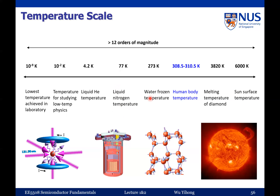Moving up further, you have the water freezing temperature, which we all know, and then room temperature a little bit above that. And then there is the human body temperature range. Amazingly, our human body temperature can only be within a very, very small range compared to the entire temperature scale. This basically tells you how fragile our body is — the temperature cannot be too low or too high.